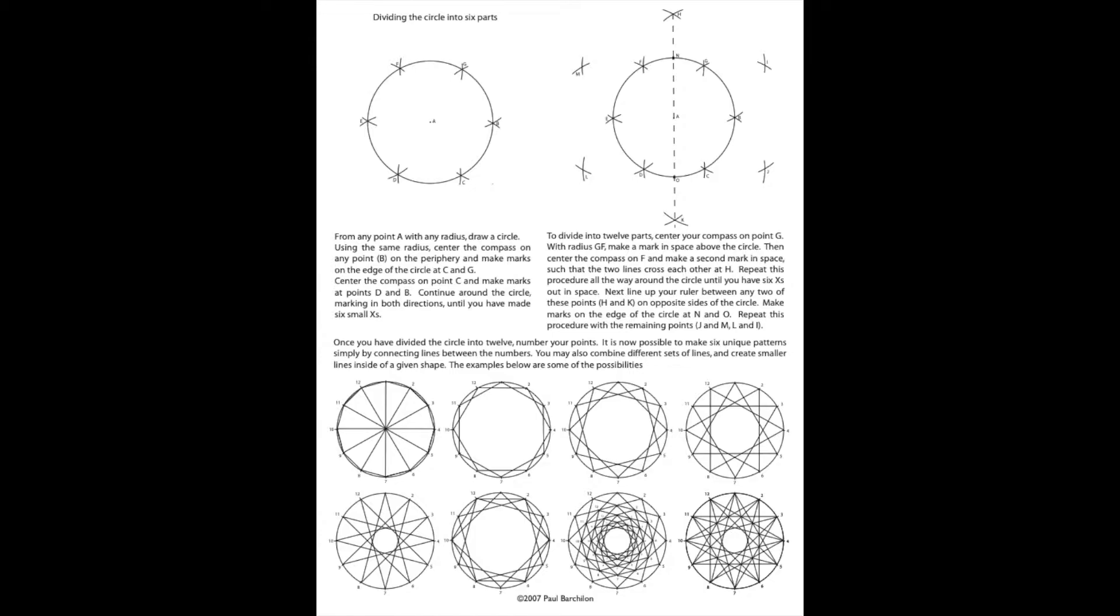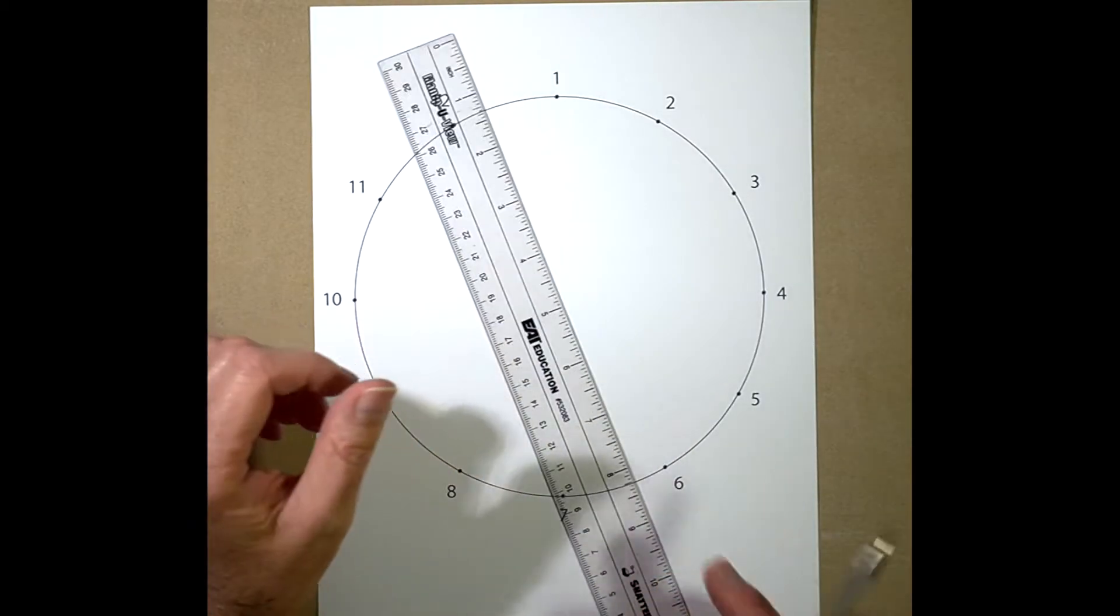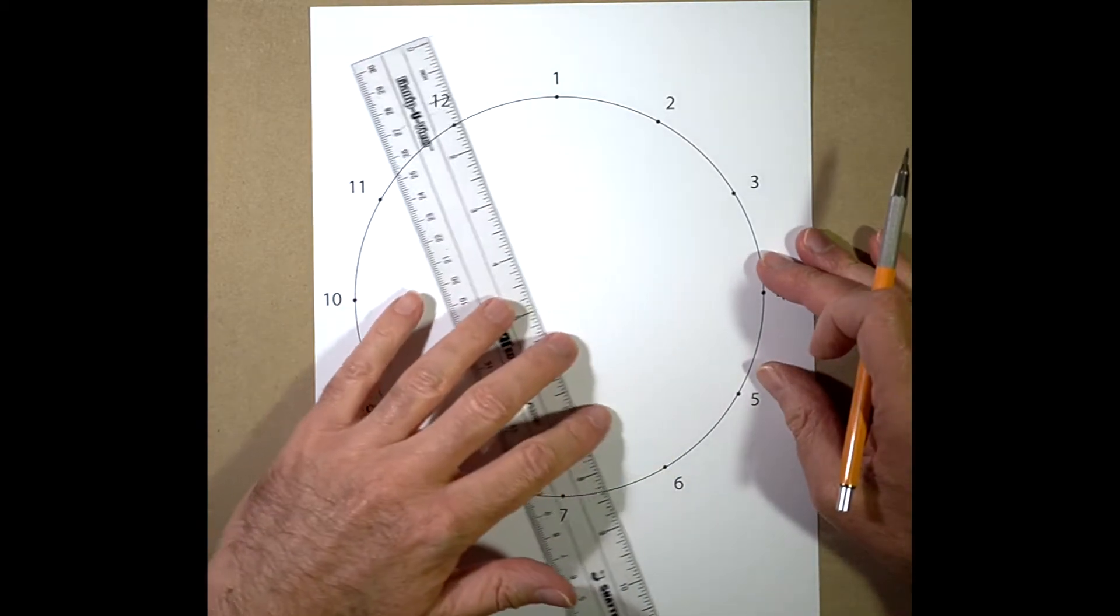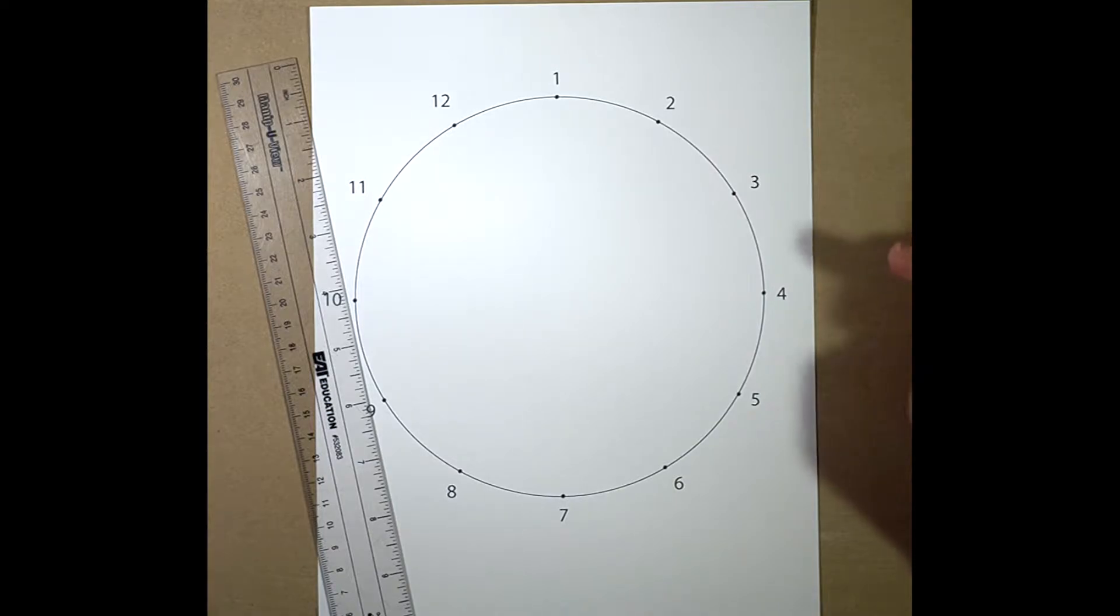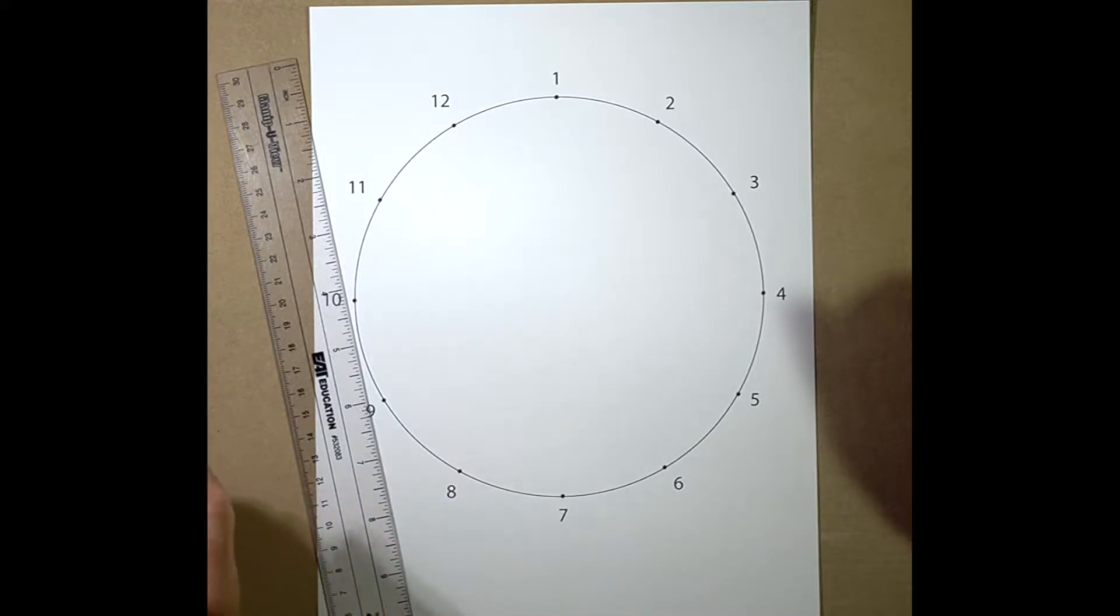So part of the magic of Islamic geometry is once you have a circle that's divided into 12, there's all sorts of beautiful patterns that you can create inside of that. All we have to do is draw lines between any two numbers, but it's very important that we do it in order.